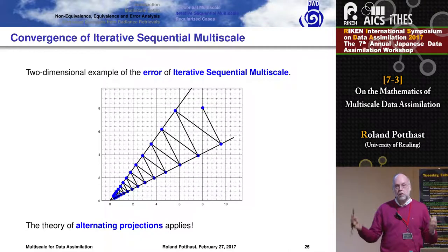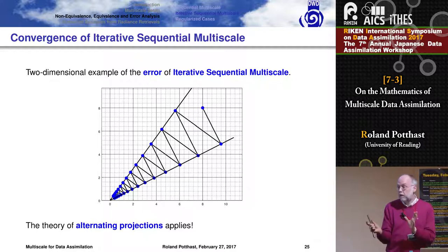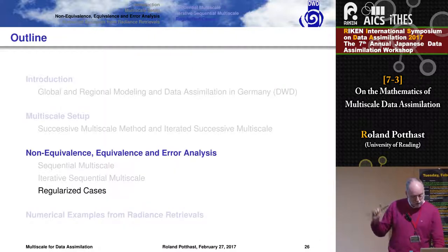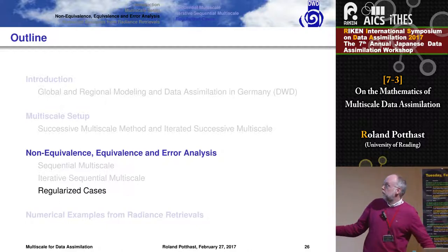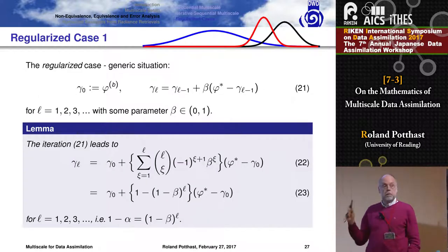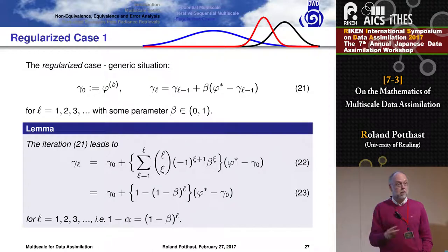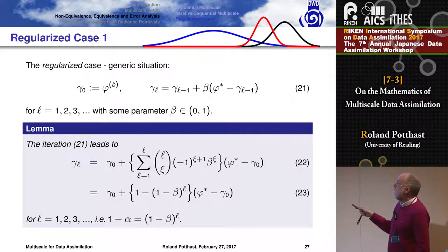I have ignored one important thing, and that is we have a background term and I've just left it away with the projection. We know if we have the best first guess and data, we somehow get a balance between the two, a posterior distribution, and we have a background term to take into account.